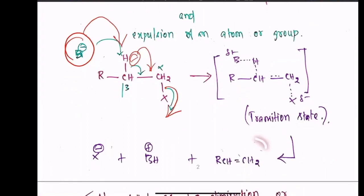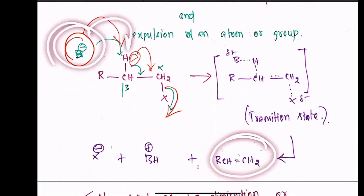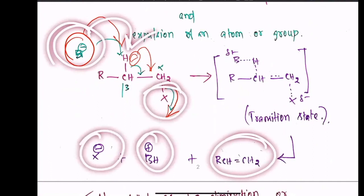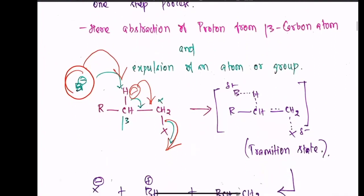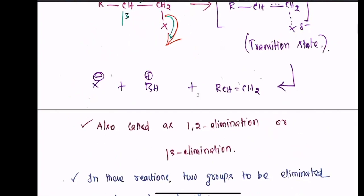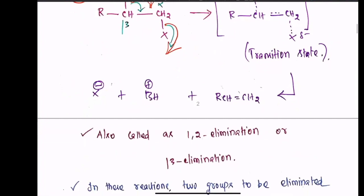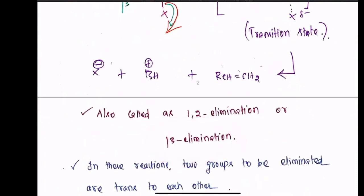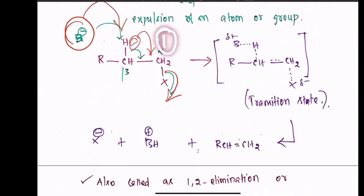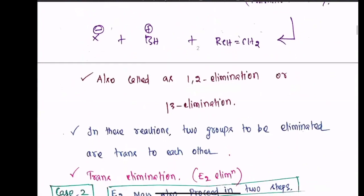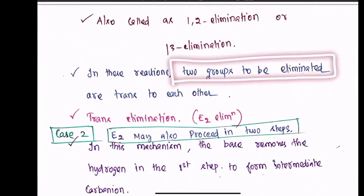E2 elimination is also called 1,2-elimination or beta-elimination. In these reactions, the two groups to be eliminated are trans to each other. This is called trans elimination, and trans elimination is E2 elimination.